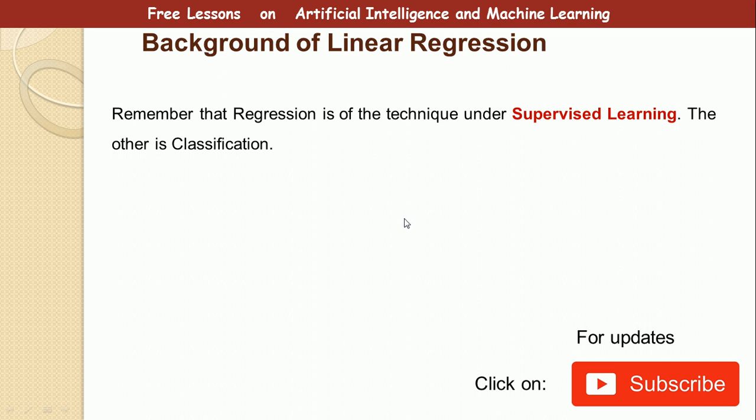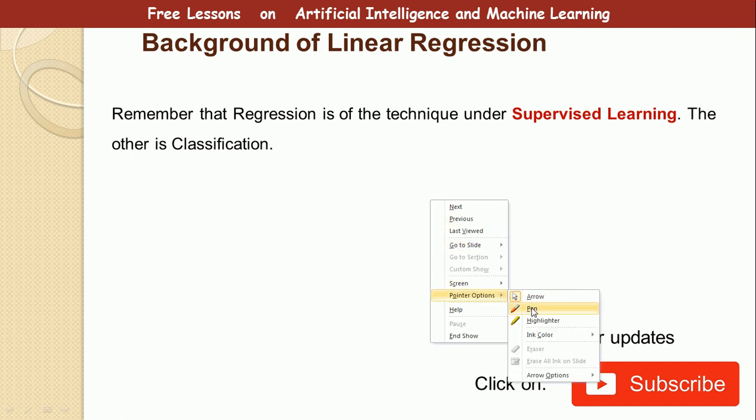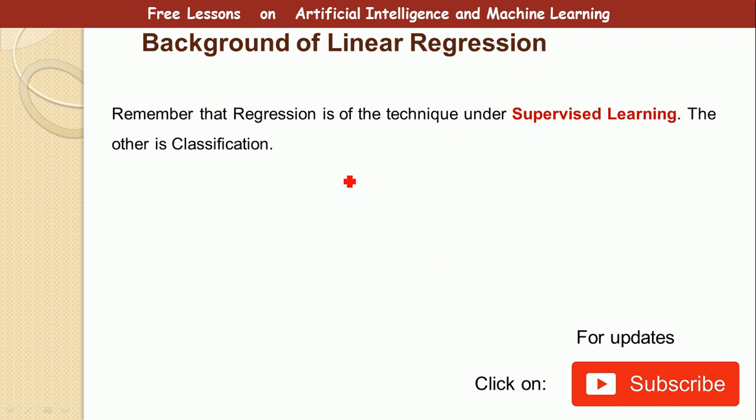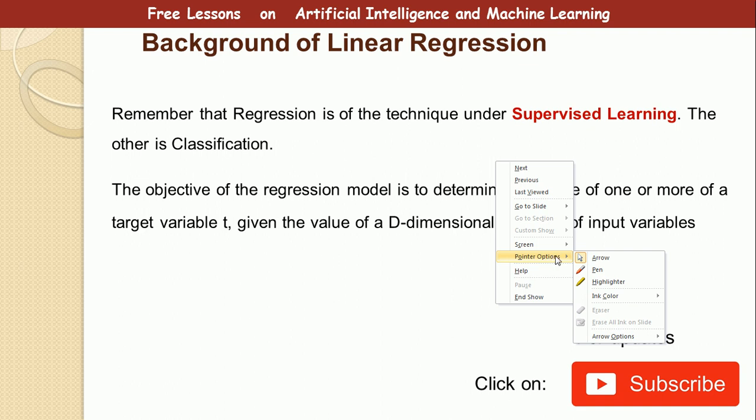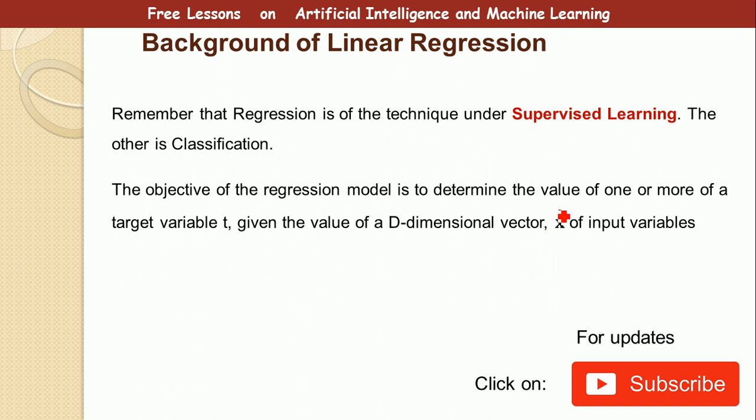Remember that regression is a technique under supervised learning. Under supervised learning, we have two techniques: classification and regression. The objective of regression is to determine the value of one or more target variable t, given a d-dimensional input vector. So you have inputs and you need to determine the target variable t, meaning that you have inputs and you need to determine output.